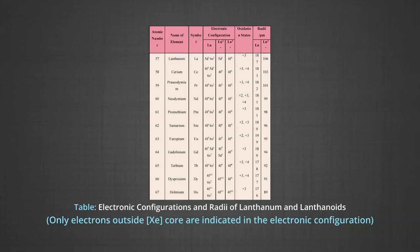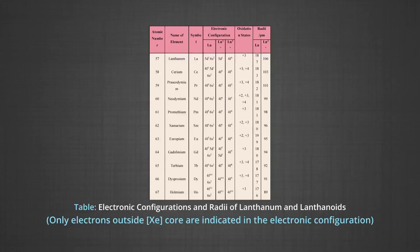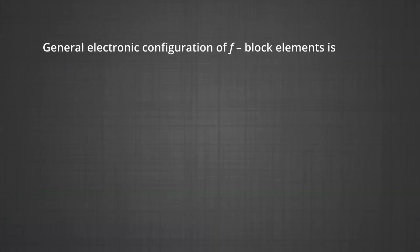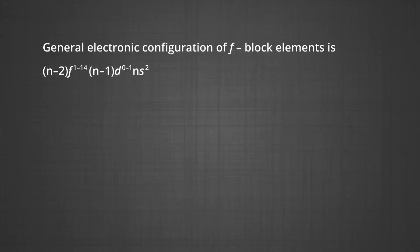The names, symbols, electronic configurations of atomic and some ionic states, and the atomic and ionic radii of lanthanum and the lanthanides, for which the general symbol Ln is used, are given in the table. These elements have an incomplete f orbital of the anti-penultimate shell, in addition to the incomplete d orbital of the penultimate shell. The general electronic configuration of F block elements is (n−2)f¹⁻¹⁴, (n−1)d⁰⁻¹, ns².